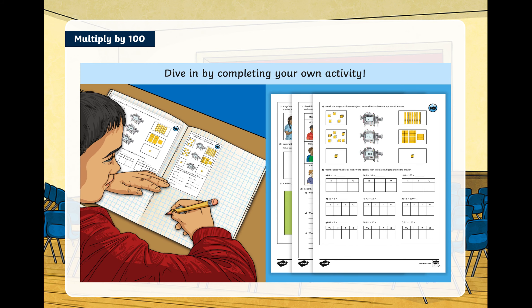Well done today everyone. There are worksheets saved in the files section on your Teams page so you can carry on practising these skills. Remember the chili challenges: the one at the top with the clouds is chili one, the middle one with the fish is chili two, and the one at the bottom of the ocean is chili three. If you have any questions about multiplying by 100, please send me a message on Teams and I'll help you out. Thank you for watching — bye!